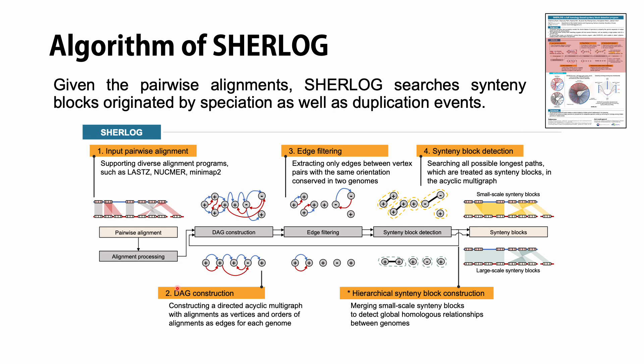By using a directed acyclic graph, we can detect multiple syntenic blocks in a single genomic region, as well as avoid reliance on a reference genome in Sherlock.